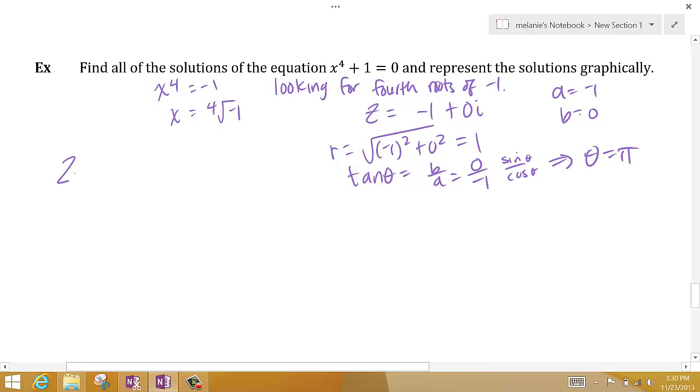So I can rewrite z as 1, that's my r, times cosine pi plus i sine pi. Now I want the 4th roots of z.